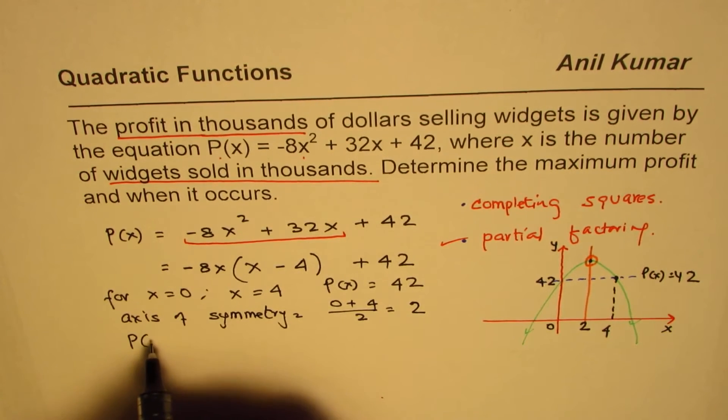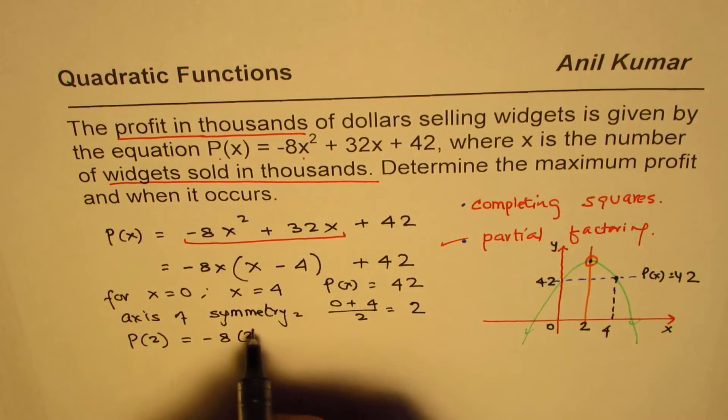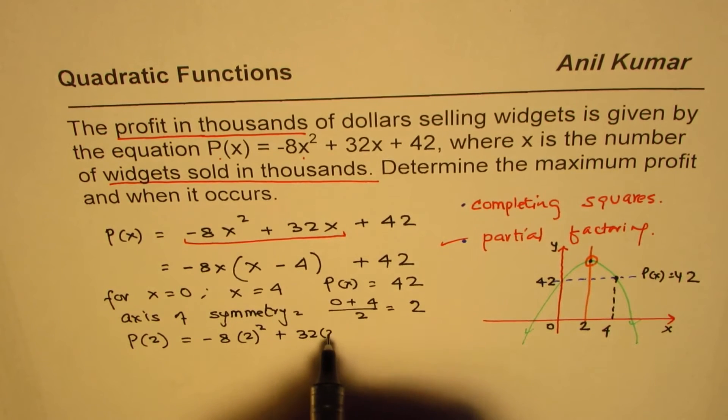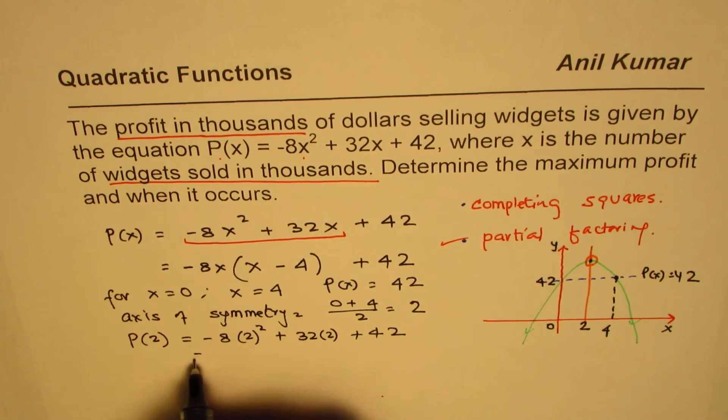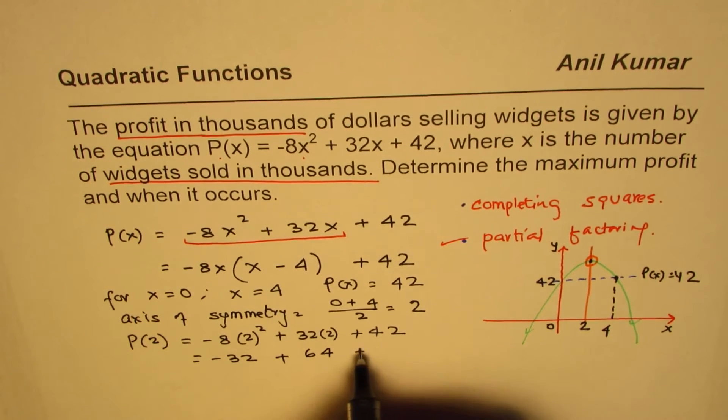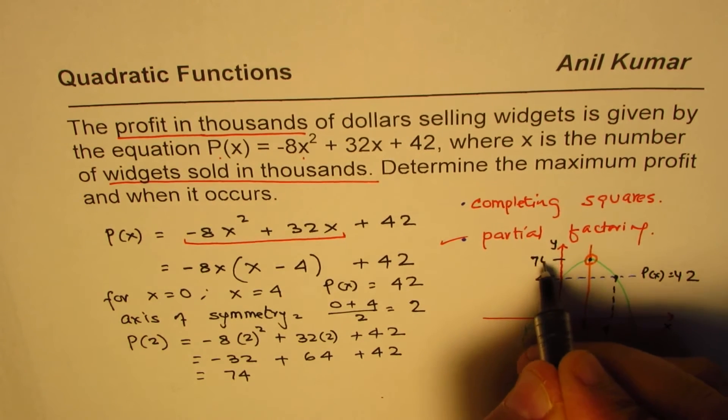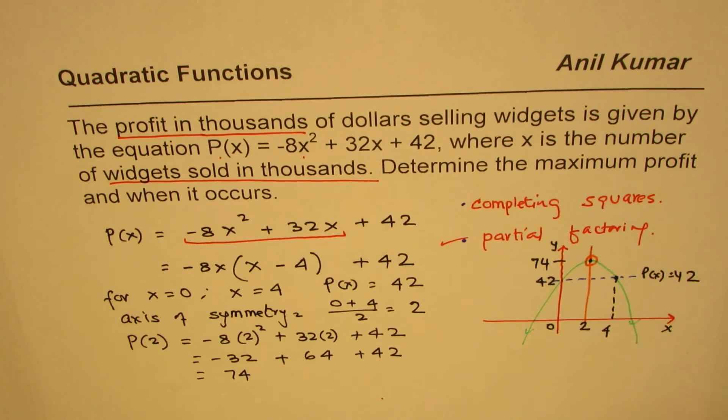So that means that for the vertex, we can substitute 2 for x and evaluate the value. So when we do that, we get minus 8 times 2 squared plus 32 times 2 plus 42. And that is 4 times minus 8 is minus 32, and here we have 64 plus 42. And that gives you 32 plus 42 is 74. So we get 74 as the value when x equals to 2.